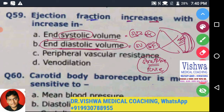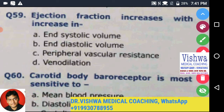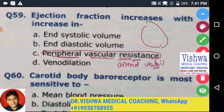So the more the end diastolic volume, the more the stroke volume, and the more the ejection fraction — that is logical. Now let's look at the other options. Peripheral vascular resistance is the resistance offered by the arterial system to the ventricles. The more the peripheral vascular resistance, the more force is needed, and if the heart muscle has limited power, the ejection fraction will decrease. So ejection fraction is inversely proportional to peripheral vascular resistance.